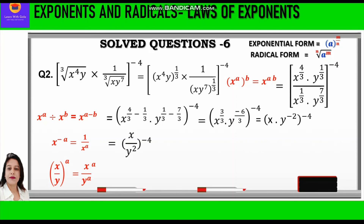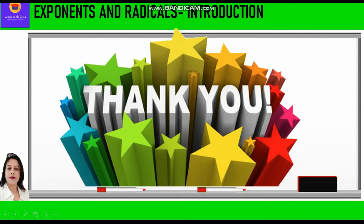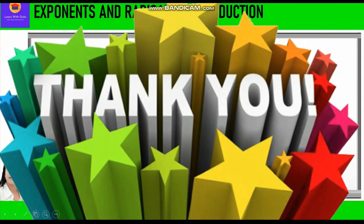Further, we apply the law of Power of Quotient: x upon y whole raised to power a equals x raised to power a upon y raised to power a. So we distribute minus 4 between numerator and denominator, writing x raised to power minus 4 upon y raised to power minus 8, since 2 into minus 4 is minus 8. Both are now negative exponents, so applying the negative exponent law again and reciprocating the base, we get y raised to power 8 upon x raised to power 4. This is how we have simplified both questions using the laws of exponents. Hope you have understood — thank you everyone.